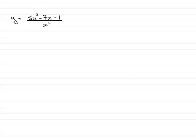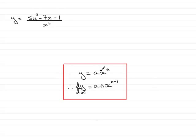What I'm going to show you is how we differentiate equations like this. Already we have seen that if we've got terms of the form ax to the power n, dy by dx is equal to an multiplied by x to the power n minus 1.